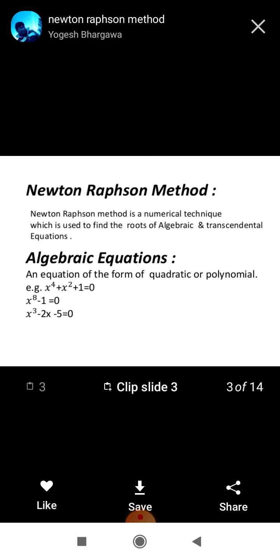Algebraic equations are given here, that is polynomial x to the power 4, x square plus 1 equals 0, x to the power 8 minus 1 equals 0, x cube minus 2x minus 5 equals 0. In equations, we solved in previous classes using factor methods, remainder theorem and formula methods.